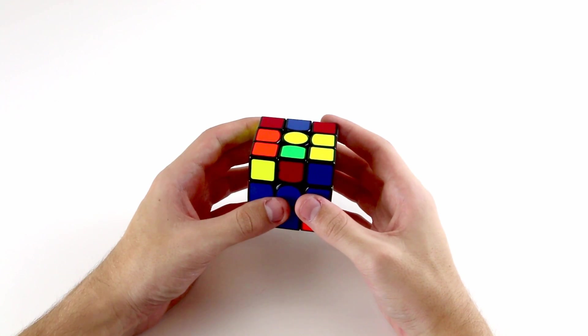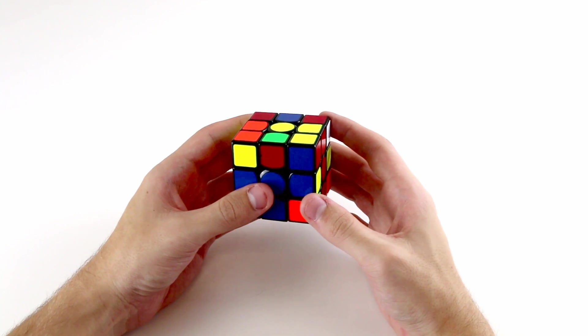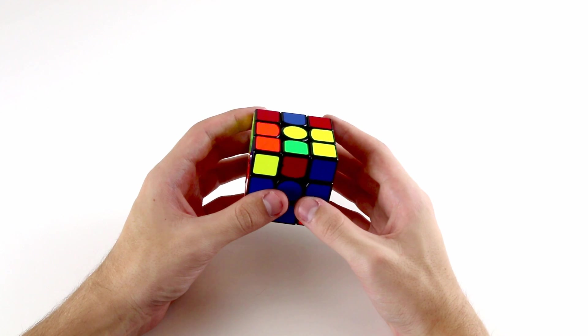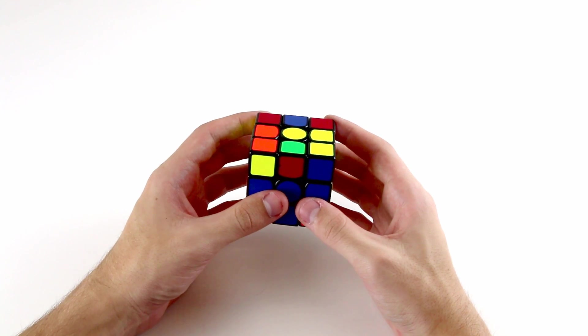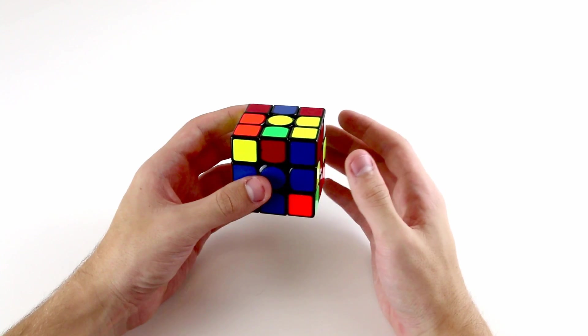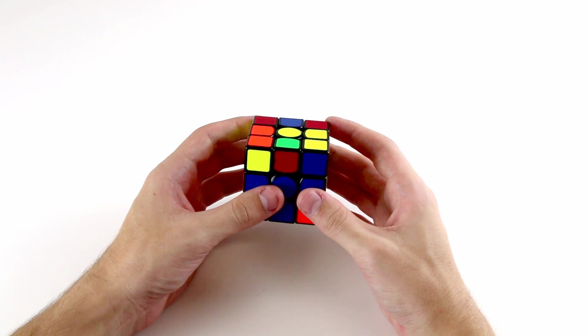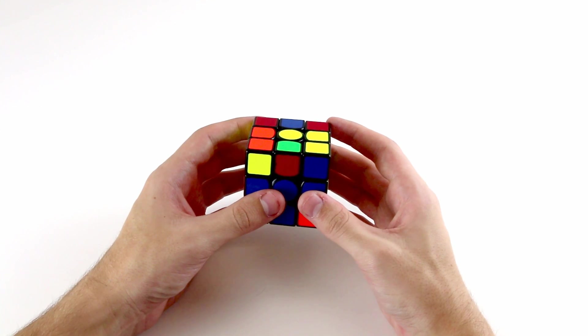If we're able to plan the cross and a first pair in inspection, this will help a lot as look ahead will be easier if we only need to do it for the second pair. This is because if you solve more of the cube before trying to look ahead, it's marginally easier to do so.